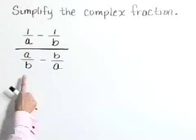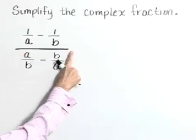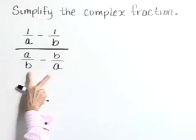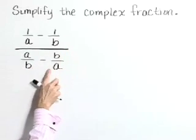Simplify the complex fraction. In our numerator, we have 1 over A minus 1 over B. In the denominator, A over B minus B over A.